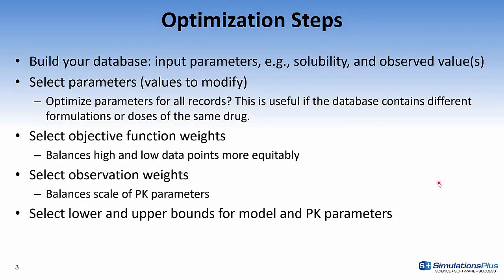This slide describes the steps involved in performing an optimization. First, you'll build or create the database, which includes importing the molecule and parameters such as solubility, and also the observed values. The next step is to select the parameters or values to modify — you'll be prompted to optimize parameters for a single record or for all records. This would be useful for a congeneric series where you want to optimize the absorption scale factors. The next step is to select the objective function weights, which is the function you're minimizing — the difference between the predicted and the observed values — and can be used to balance high and low data points.